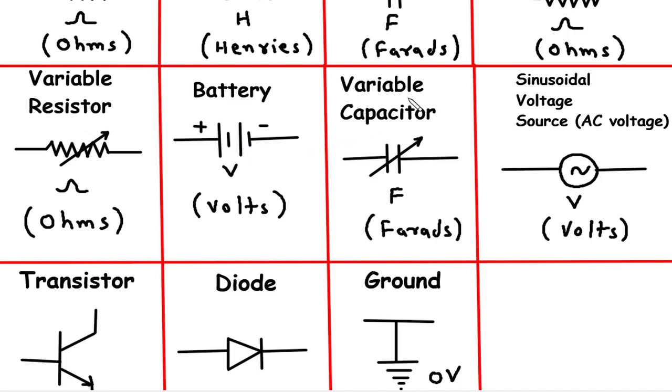7. Variable Capacitor. Now let's look at the variable capacitor. A variable capacitor, also known as a trimmer capacitor, is a capacitor whose capacitance can be adjusted manually or electronically. It is denoted by two parallel lines with an arrow or a curved line. Variable capacitors are often used in tuning circuits, filters, and frequency-dependent applications.